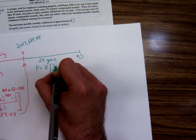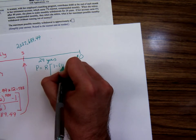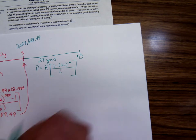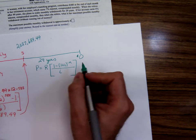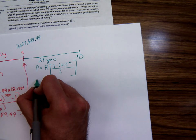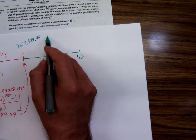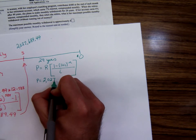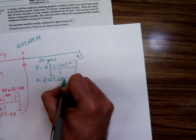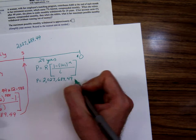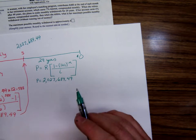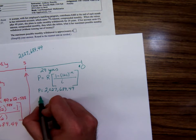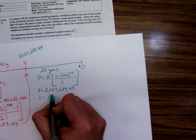That's the new formula that we, well, by new, I mean new to y'all. It's not new to the world. So P equals R times [1 - (1 + i)^(-n)] all over i. The present value, P, is that $2 million that's there in the account. $2,027,689.49. Now does the interest rate change? I don't think it does. So i stays the same, 0.07 over 12.